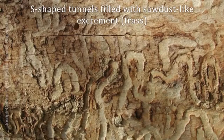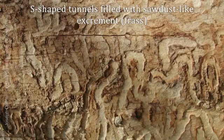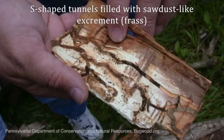Emerald ash borer larvae create S-shaped tunnels beneath the bark. The tunnels may be filled with sawdust.